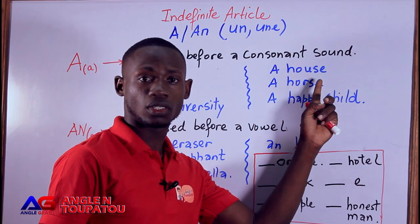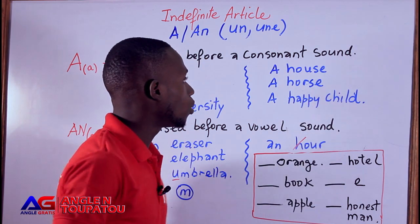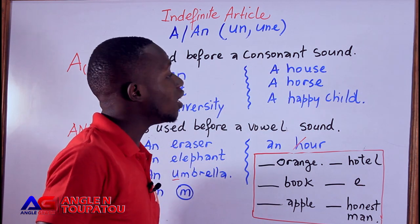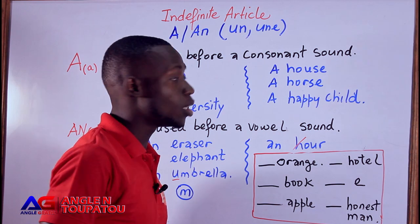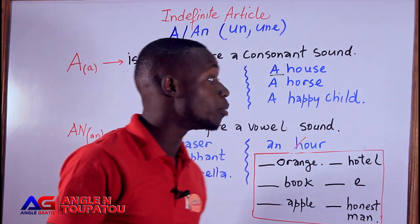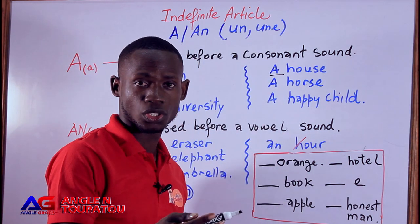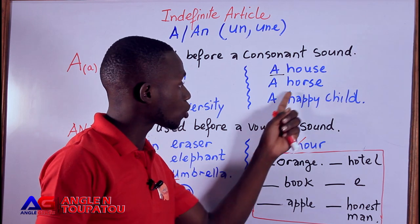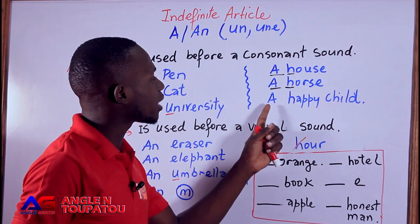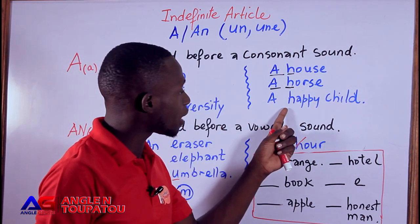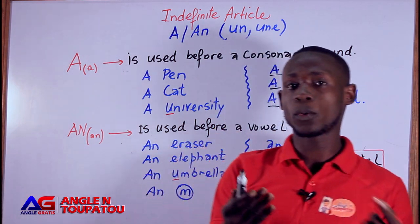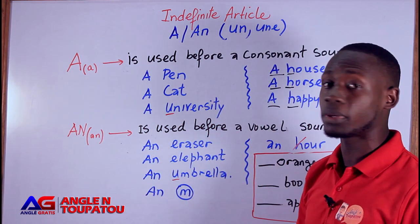Now I say 'a house'. Why do I say 'a house'? Because this letter H is pronounced. I say 'a house', 'a horse', because the letter H is pronounced. I also say 'a happy child' — the letter H is also pronounced there. So when H is pronounced, that's what tells us to use 'a'. Now, let's talk about 'AN'.